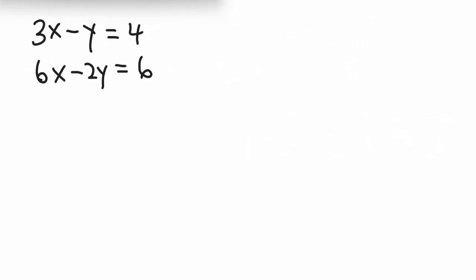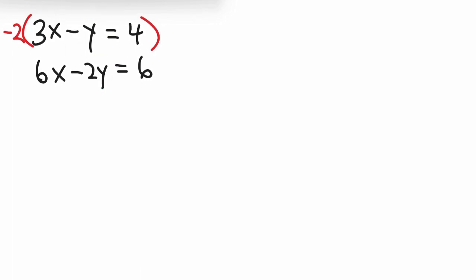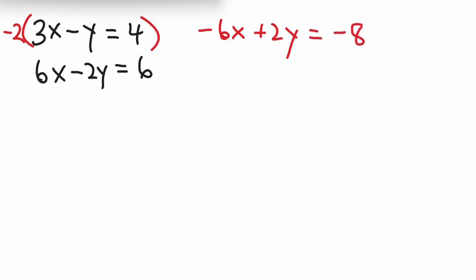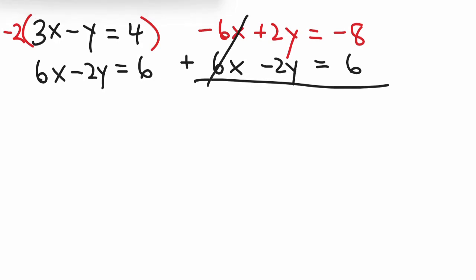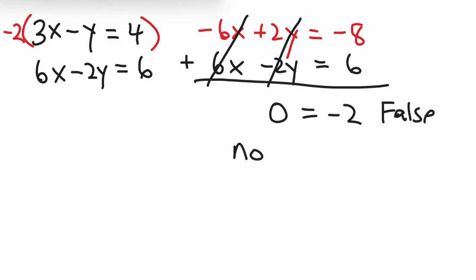Here's our last problem. I'll eliminate the y variable. Multiplying the top equation by negative 2: negative 2 times 3x is negative 6x, negative 2 times negative y is positive 2y, and negative 2 times 4 is negative 8. Adding this to the second equation, the whole left side cancels out, giving 0 on the left, and negative 8 plus 6 is negative 2 on the right. This is false — 0 is not equal to negative 2 — so this one has no solutions.